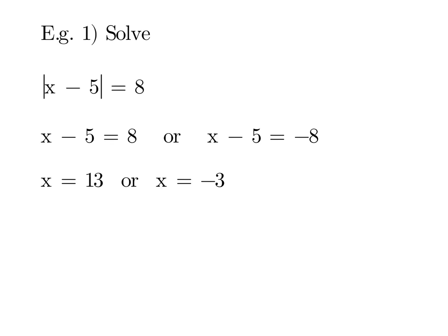So remember when we solve x minus 5, the absolute value of that equals 8. One solution is equal to 8, and the other solution is equal to minus 8. So you don't touch the inequality. It's x minus 5 equals 8, or x minus 5 equals minus 8. Then you solve each. Add 5 to both sides and you get 13 or minus 3.